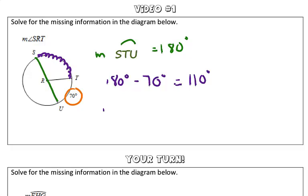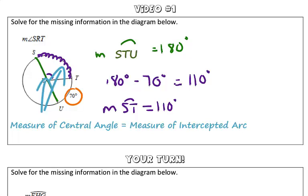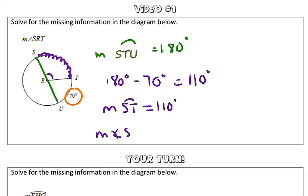So, therefore, the measure of arc ST is 110 degrees, and since the measure of the central angle SRT is equal to the measure of arc ST, the measure of angle SRT is also 110 degrees.